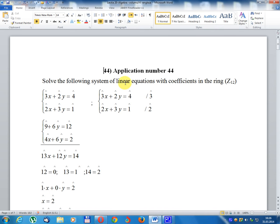Solve the following system of linear equations with coefficients in ring Z₁₂, class residue 12. 3x + 2y = 4, 2x + 3y = 1.